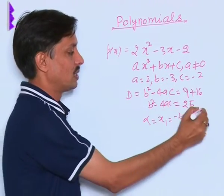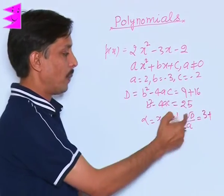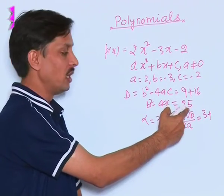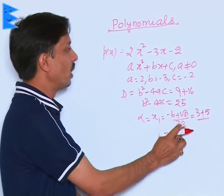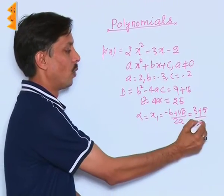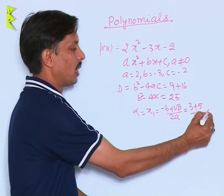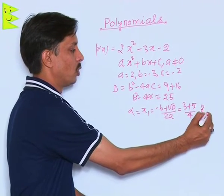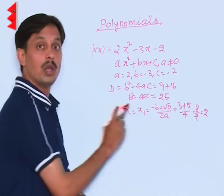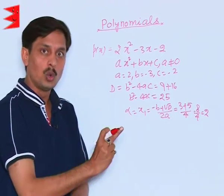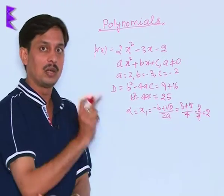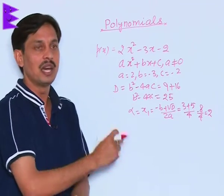So -B's answer will be +3, plus root D, 25 is the D, so root D is 5, upon 2A that is 2 times 2 is 4. So it's 8 upon 4. The first zero comes out to be 2, which is also 2 in case by the method of splitting which previously I explained you.